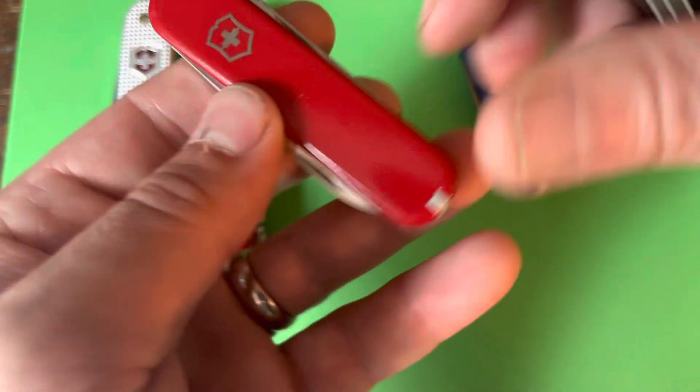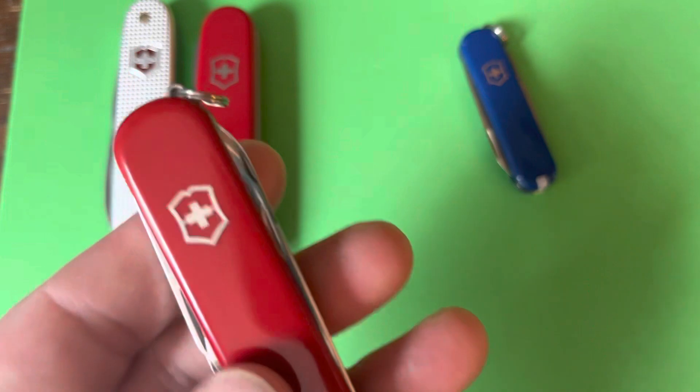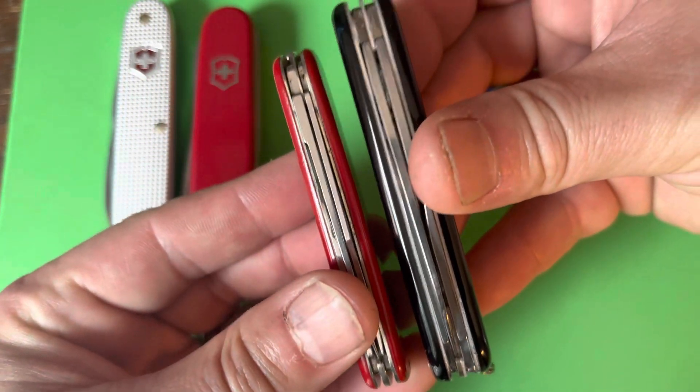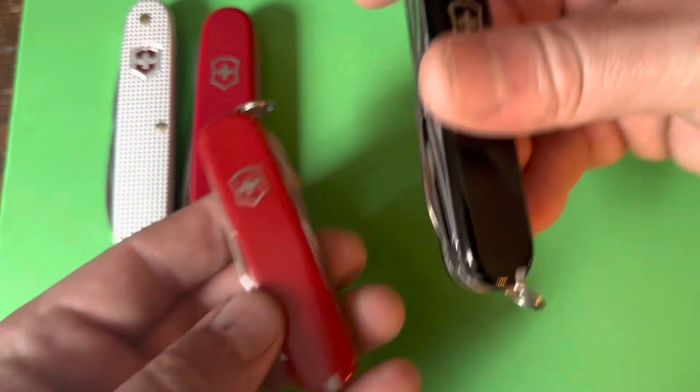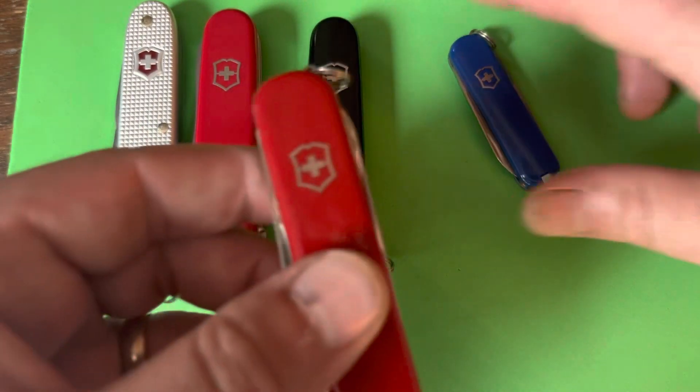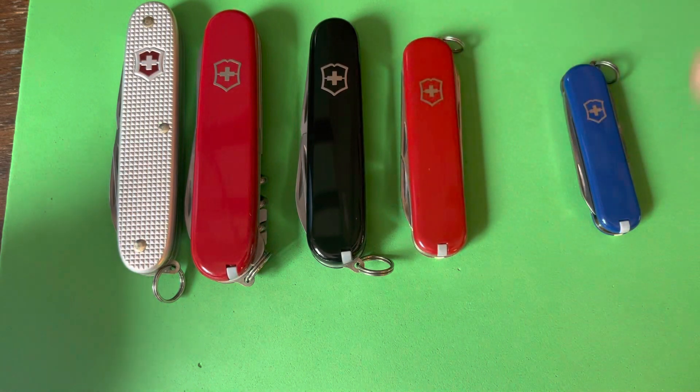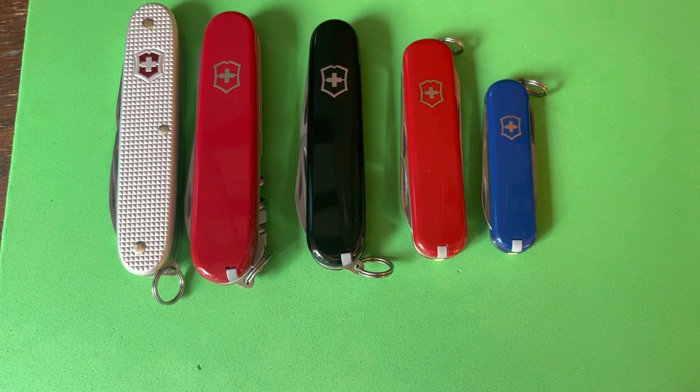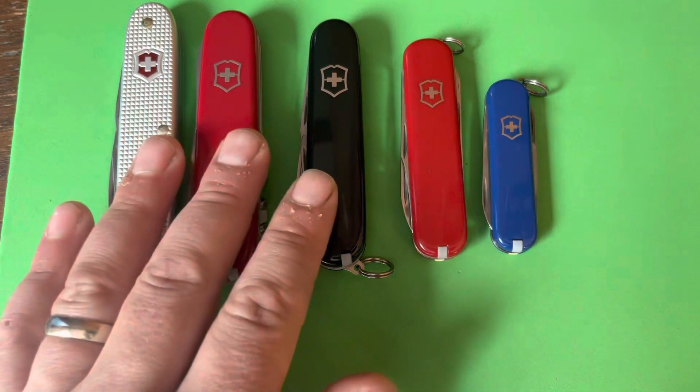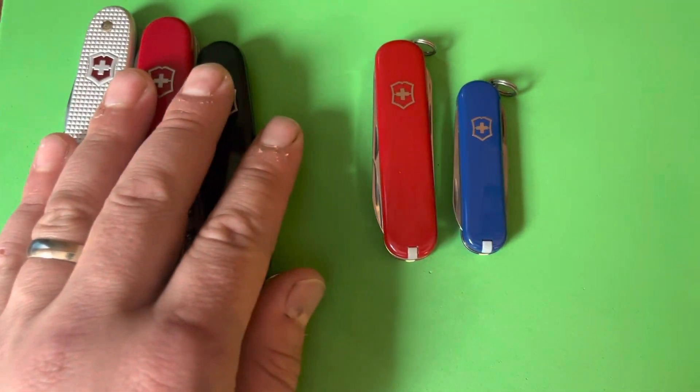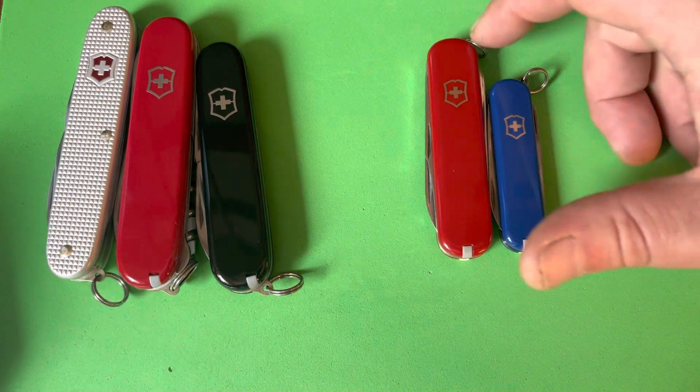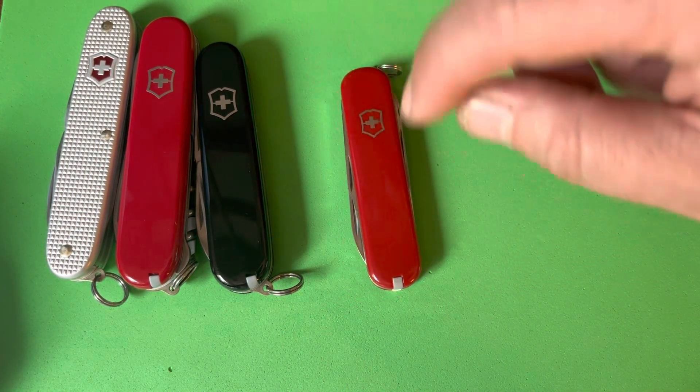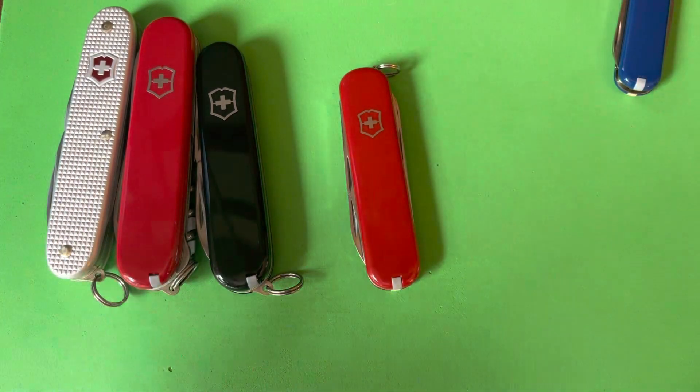The Executive is a two-layer knife. Here's a two-layer 84, the Recruit, and you can see it's substantially thicker and larger. If you want a nice compact carry - if you're just going out wearing a pair of slacks or light pants - these guys may be a little too much. This might be not enough for you. So the 74 is a great size.